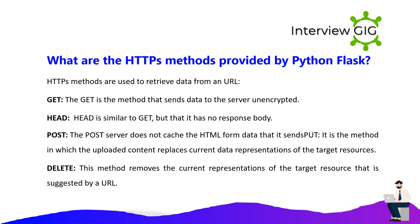What are the HTTP methods provided by Python Flask? HTTP methods are used to retrieve data from a URL. GET sends data to the server unencrypted. HEAD is similar to GET but has no response body. POST is the method in which the uploaded content replaces current data representations of the target resource, and the server does not cache the form data. DELETE removes the current representations of the target resource identified by a URL.